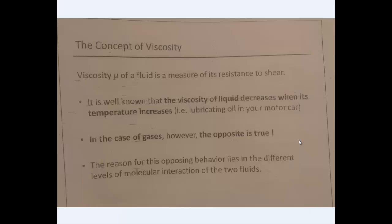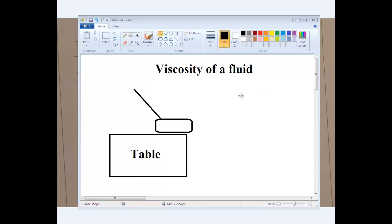Viscosity is designated by mu. It's the measure of its resistance to shear. Let's say this is my hand right now. If I move my hand on the table in any direction, I am going to make a shear stress on my hand. That is called shear stress.